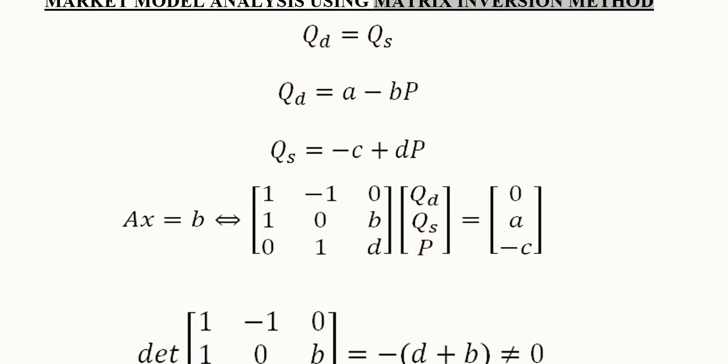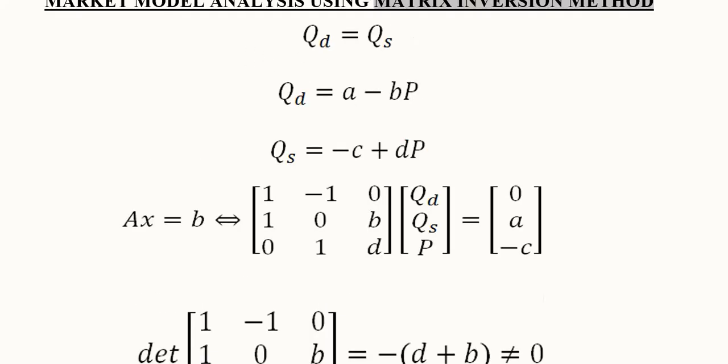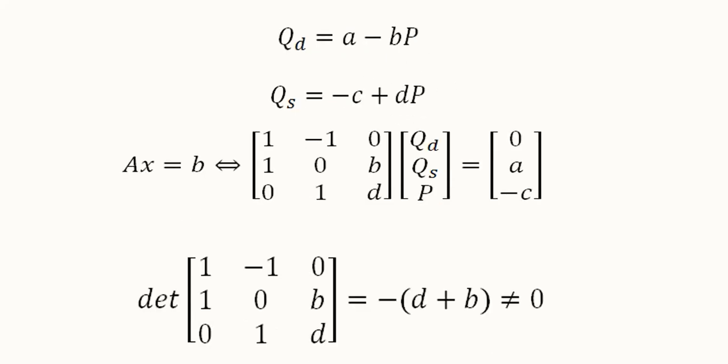There are three unknowns: Qd, Qs, and they are equal with the virtue of this equation, so the other unknown would be price.